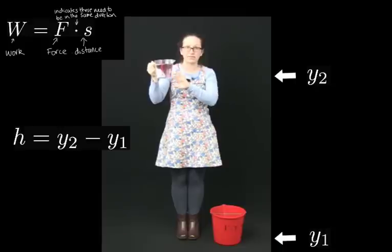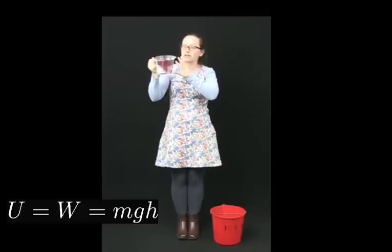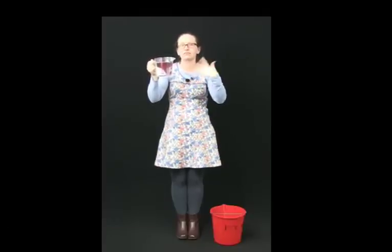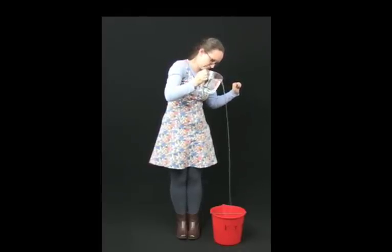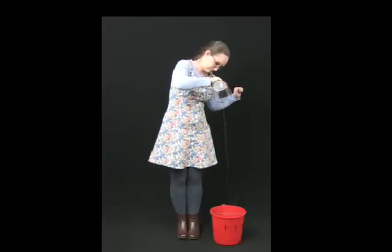Because I've done that amount of work on it, I've given it that energy stored as gravitational potential energy just by raising it to this height. If I let go, it falls back to the Earth and gains kinetic energy as it does so. It's possible to put a paddle wheel or turbine in its path, and the falling water can then do work on that turbine. We're effectively converting gravitational potential energy into work done on the turbine, which in turn gets changed into electricity.